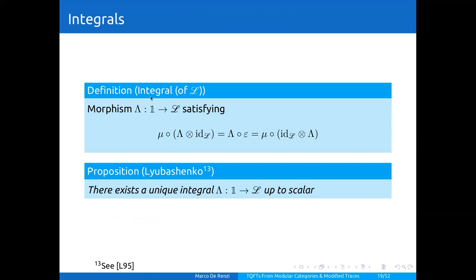The definition is the following. An integral of L is a morphism of the category C satisfying two defining relations: the composition of the product for the Hopf algebra structure on L with lambda tensor identity has to equal lambda composed with the counit, and this also has to equal the product composed with the identity tensor lambda. This is in fact the definition of a two-sided integral.